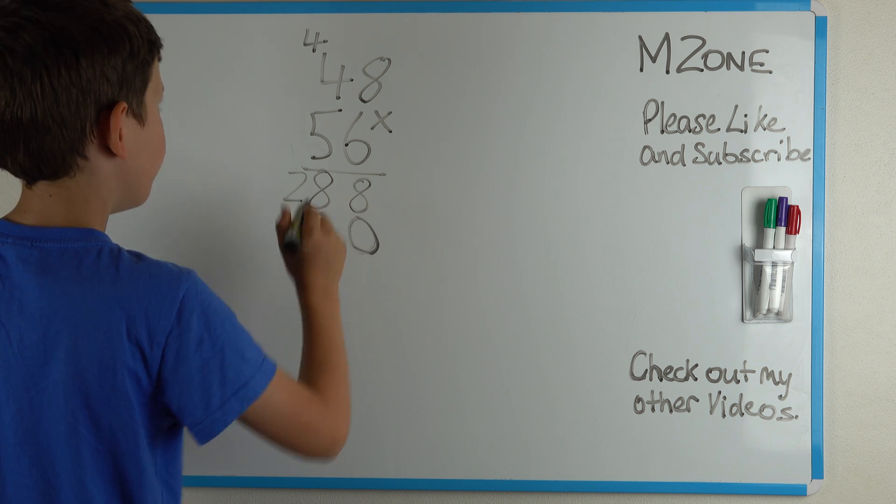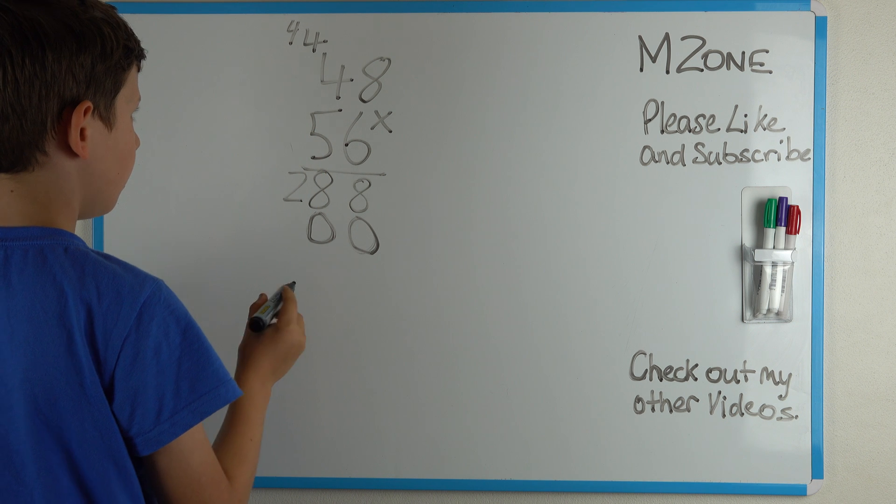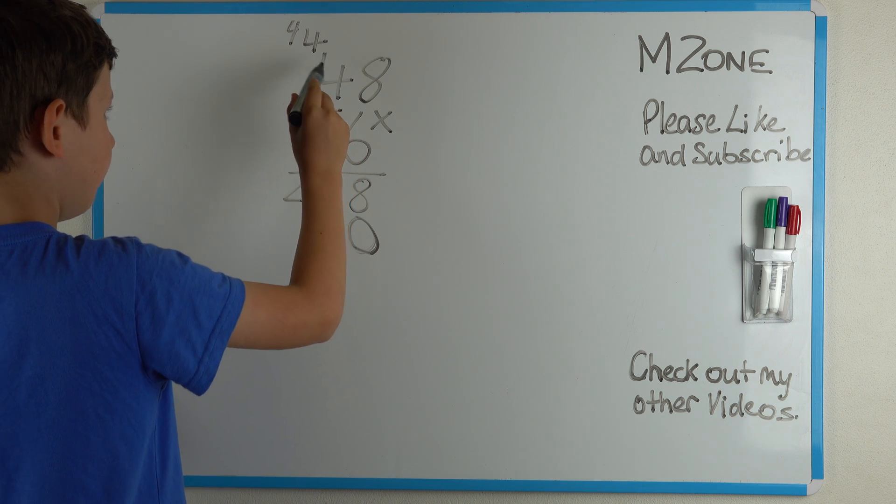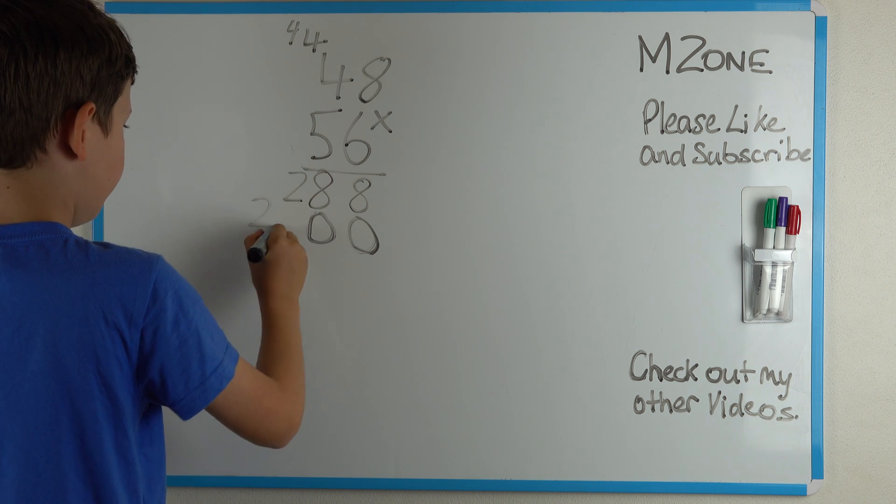So there's a 0 here and a 4 here. 5 times 4 is 20, plus the 4 over here is 24.